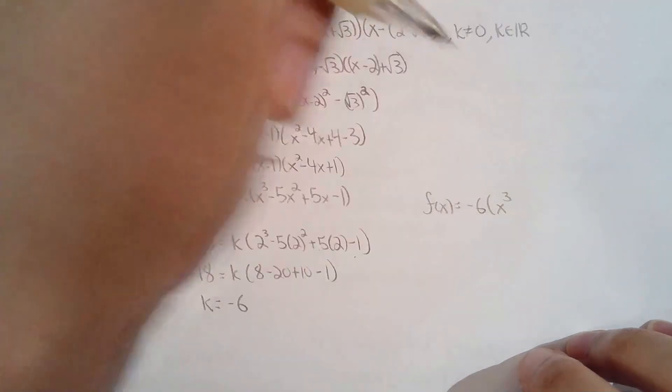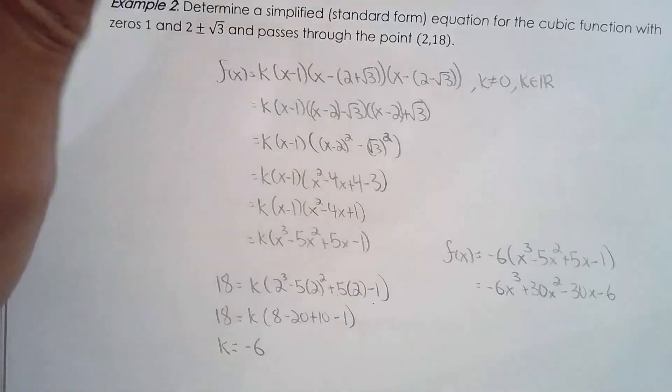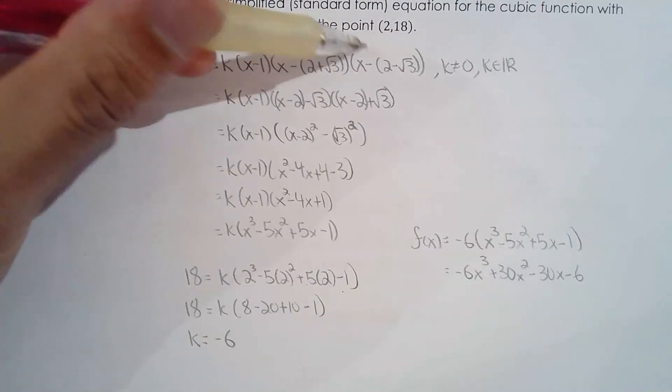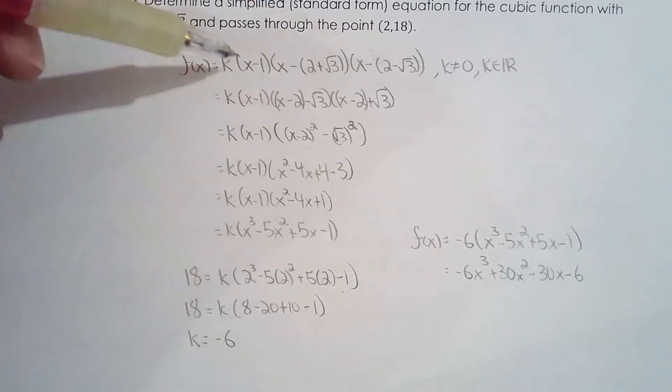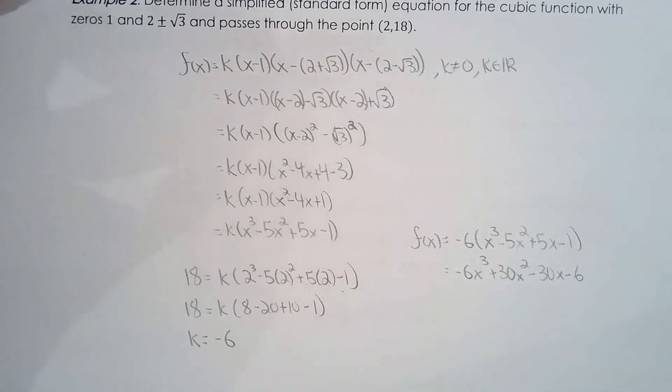So f of x equals negative 6 times x cubed minus 5x squared plus 5x minus 1, which is in standard form. There we go. So this is the equation in simplified form or standard form for the cubic function with zeros of 1 and 2 plus or minus root 3 and passed through the point 2, 18. So basically what we did here is you can envision there's a family of polynomial functions and you went from family because you have the point 2, 18. You're able or capable of solving for the equation for the particular member of that family. Okay.